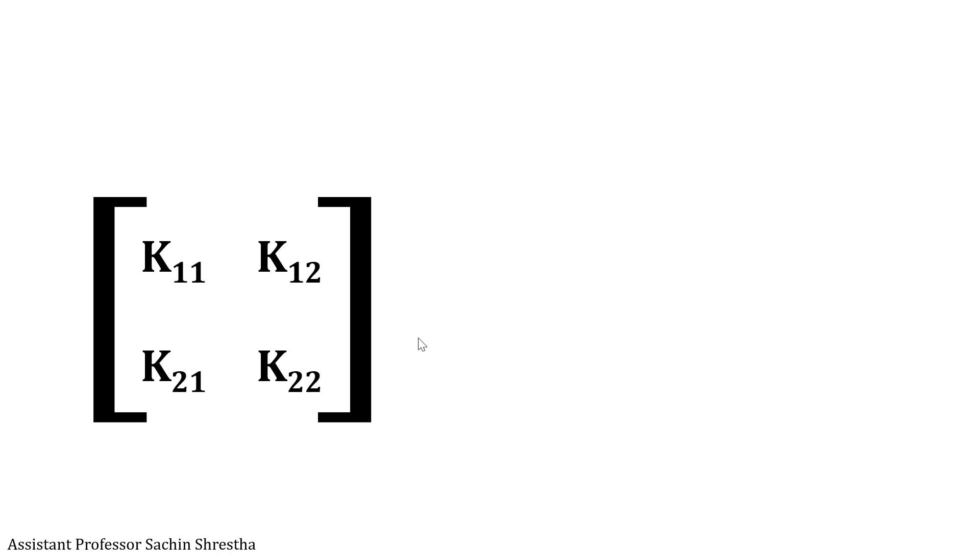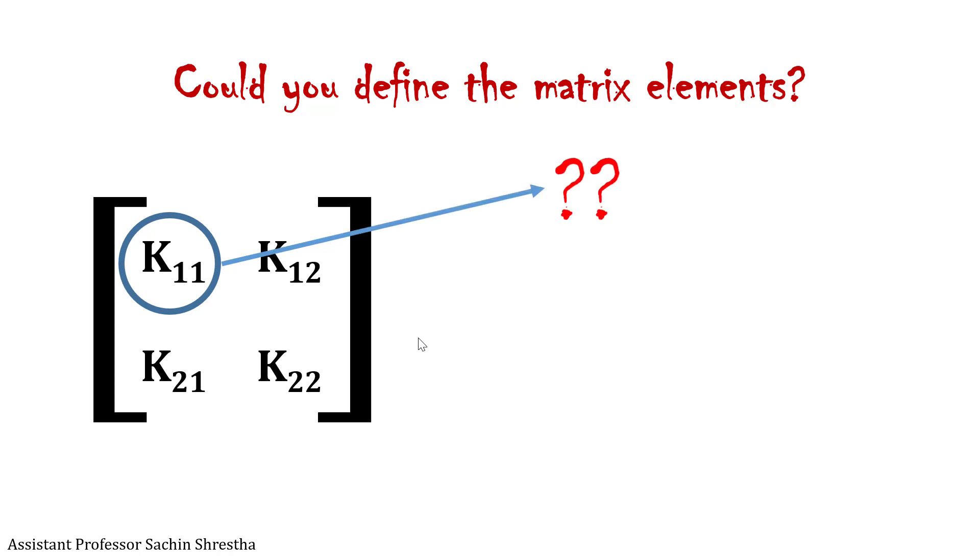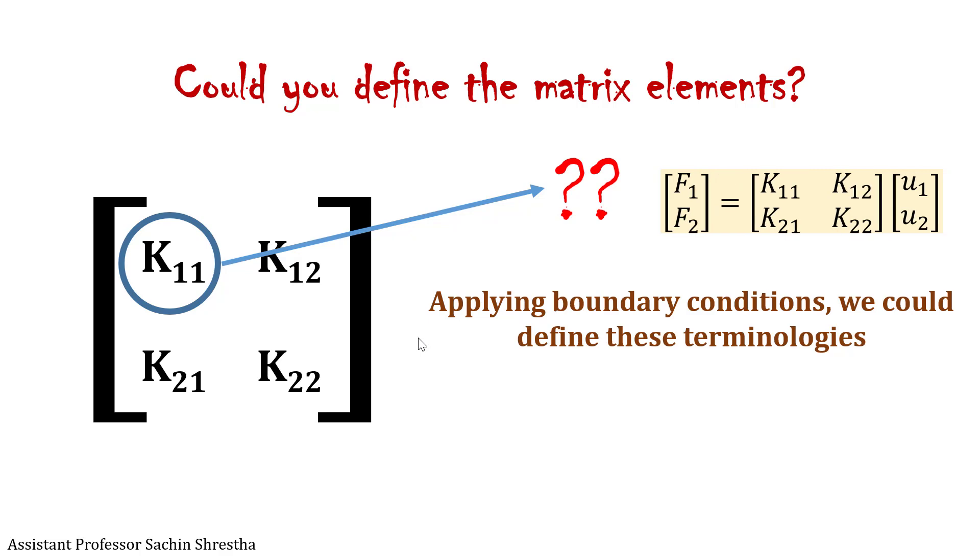We can define the parameters K11, K12, K21, and K22. For this we can apply boundary conditions. First, let's rewrite the equation and apply the boundary condition.